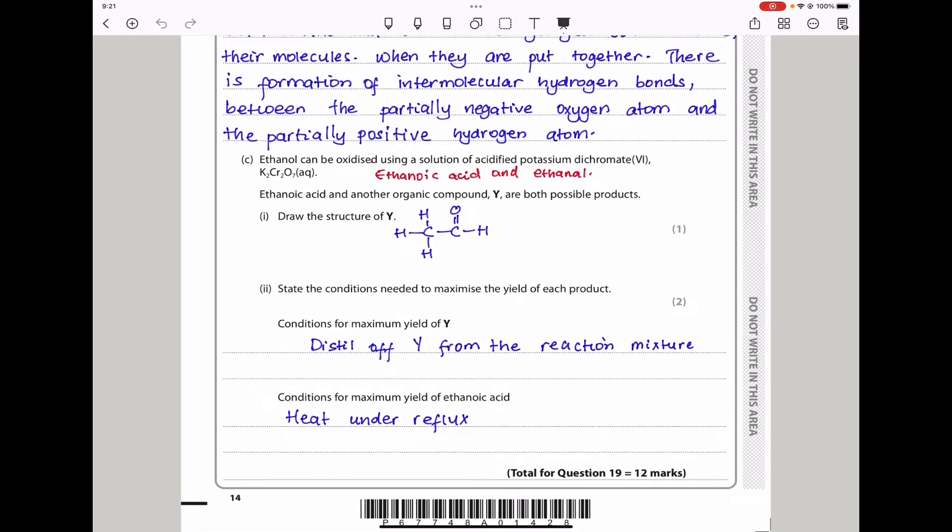They say state the conditions needed to maximize the yield of each product. To maximize the yield of ethanoic acid, you need to heat under reflux. To maximize the yield of ethanal, you will need to distill in order to get the product really fast before it's fully oxidized into ethanoic acid. For the product Y, which is ethanal, you need to distill Y from the reaction mixture. For the carboxylic acid or ethanoic acid, you need to heat under reflux. This brings us to the end of question 19. Let's continue to question 20.